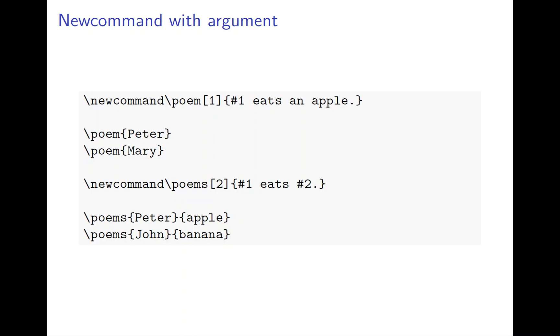The #1 is the variable you want to put in, like 'eats an apple'. So we have \poem{Peter} which becomes 'Peter eats an apple', and \poem{Mary} becomes 'Mary eats an apple'.